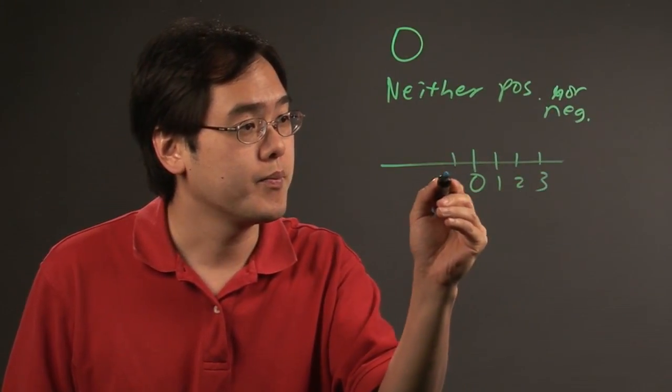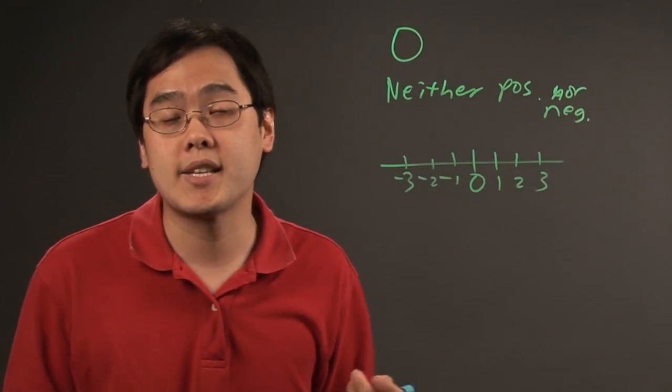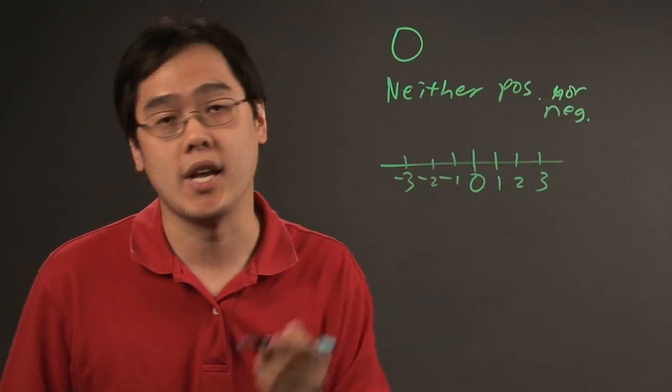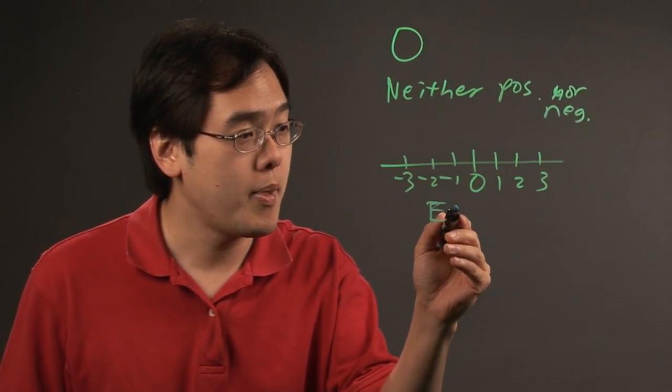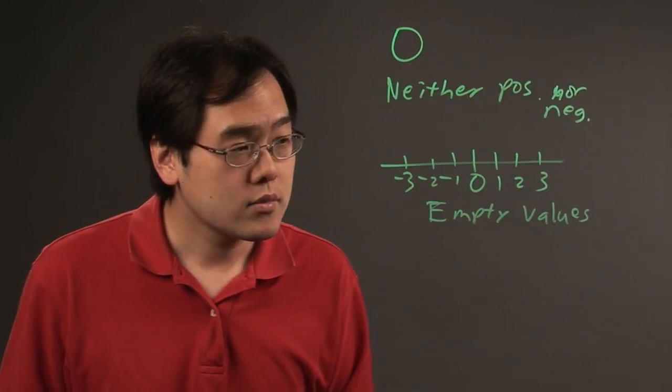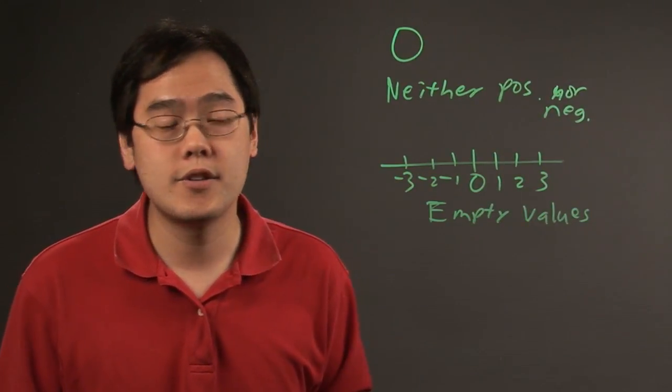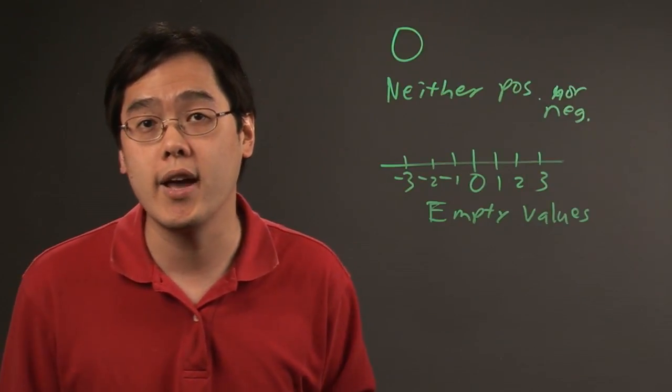In some ways, zero acts as a boundary between the positives and the negatives. But something else to consider is that zero is a great number to express empty values. For example, if you have zero items left, no money left, you can't really use a positive or negative value.